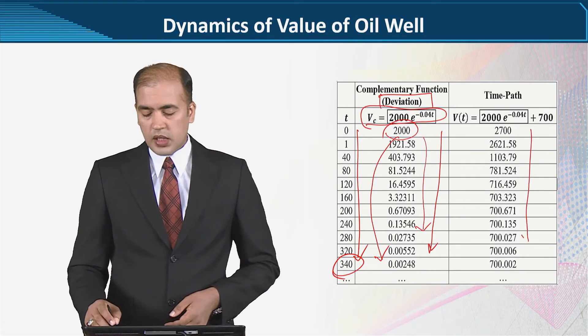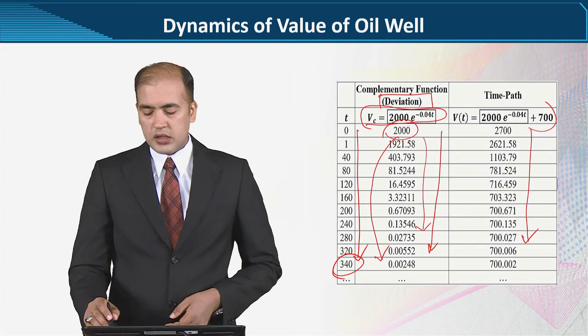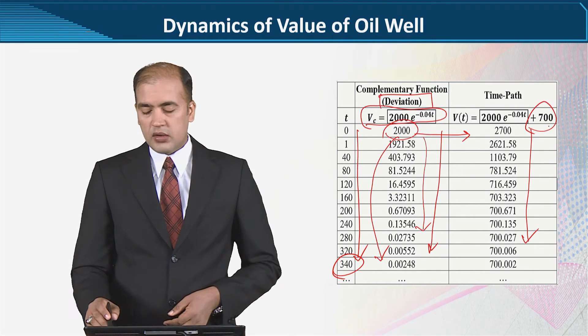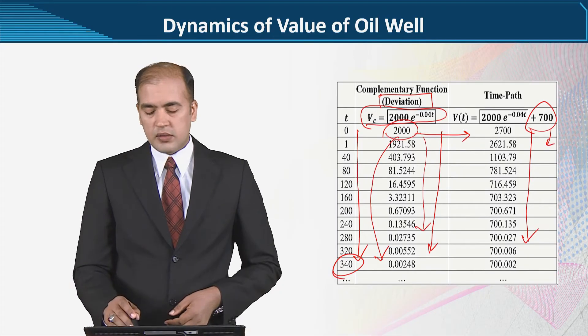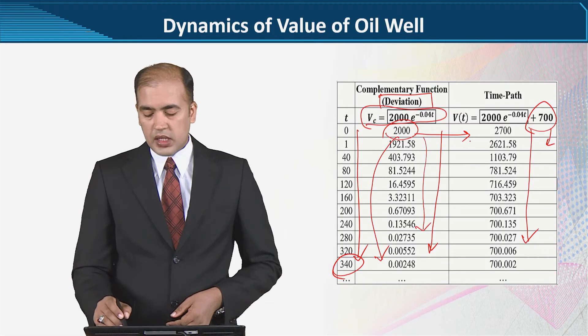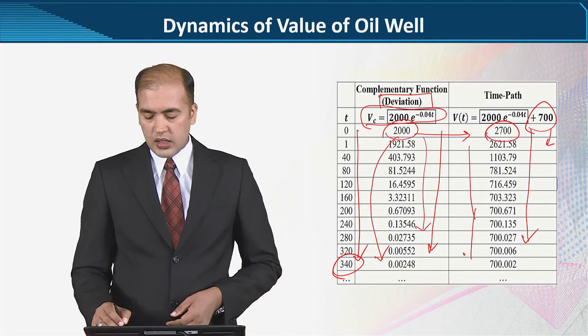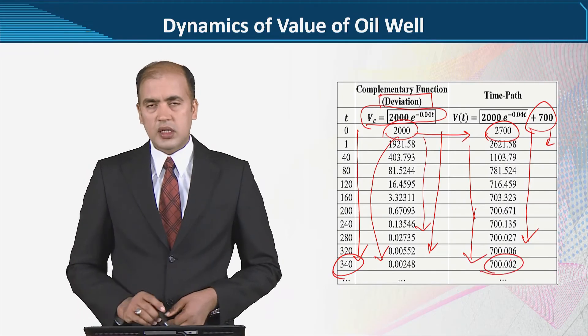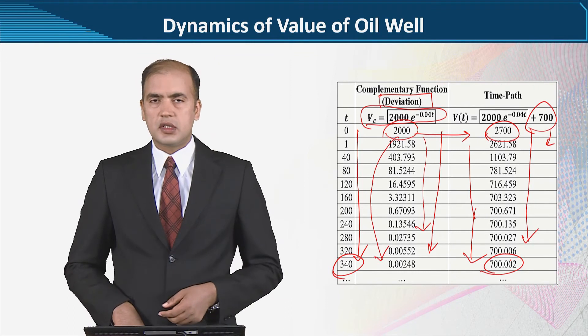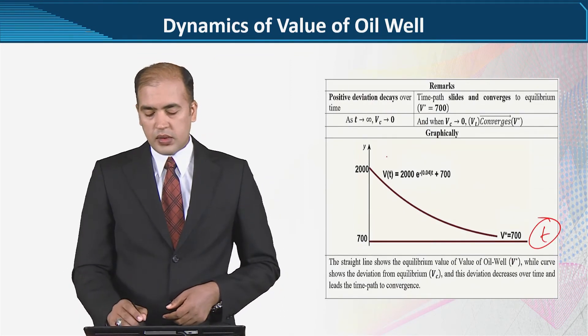उसके बाद जो हमारे पास time path है वो हमने calculate किया जिसमें हमने सिर्फ 700 add किया इस deviation के अंदर, जो के equilibrium value है 700 and deviation की values उसमें हमने जमा की. जमा करने पर we found that initial value जो के 2700 थी उससे कम होते होते value 700 के करीब पहुँची जो के equilibrium value है. It means convergence is happening towards the equilibrium.